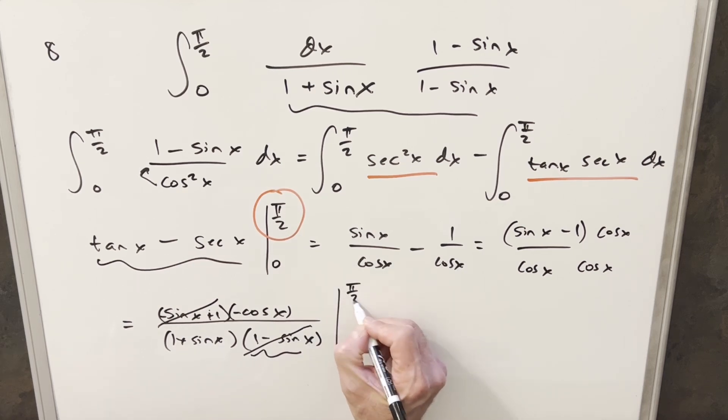So what I'm going to do now is we're going to evaluate this thing, put my bounds back in here. So now we'll plug pi over 2 in here. And it's just going to give me 0, because cosine of pi over 2 is 0. So we're going to have a 0 for the first piece. And then we plug in 0.